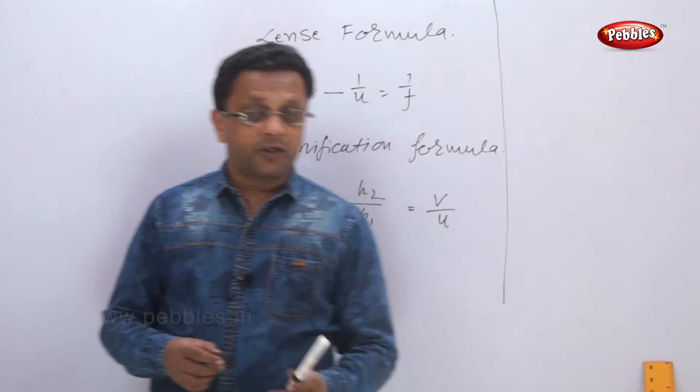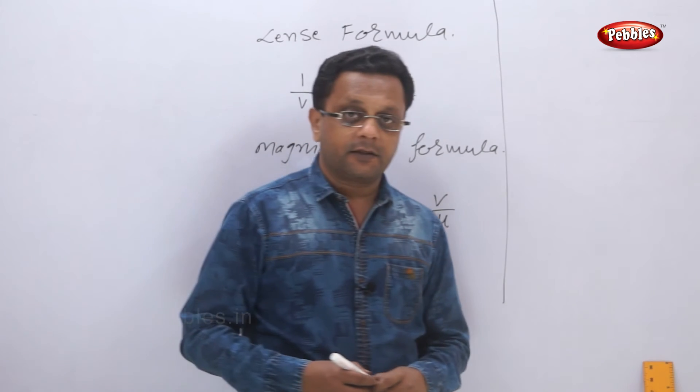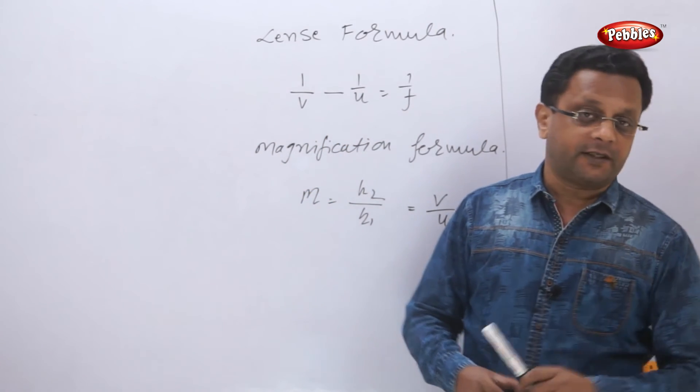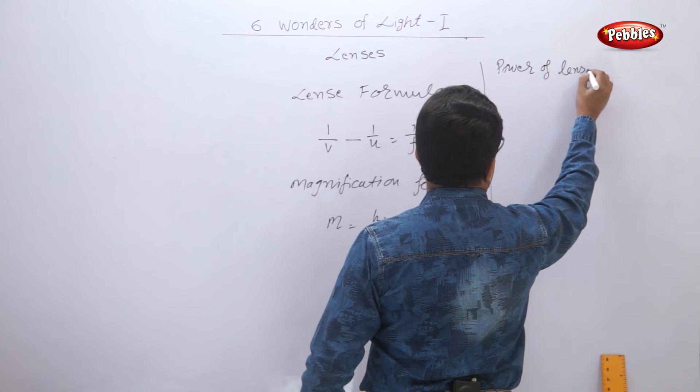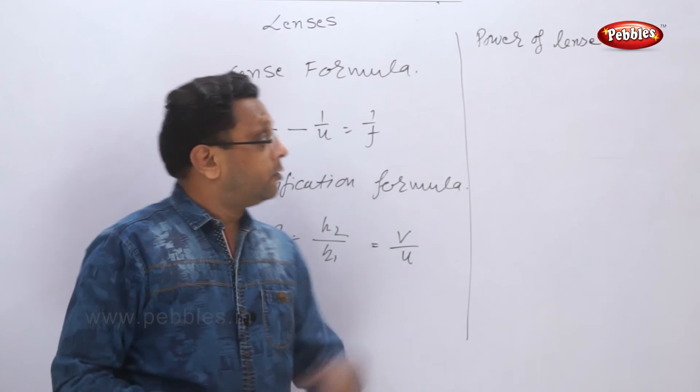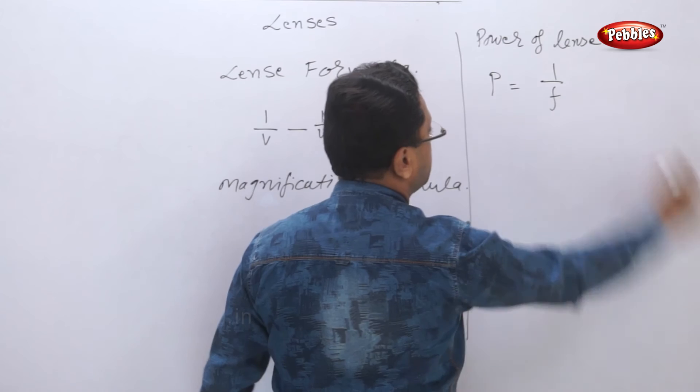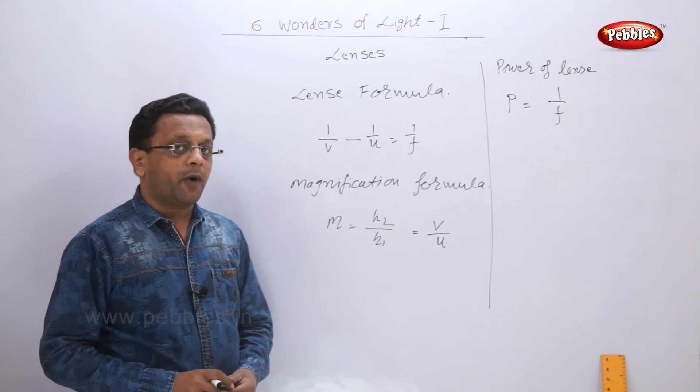Power of lens. This power of lens, P, is nothing but the reciprocal of focal length. The unit of power of lens is diopter.